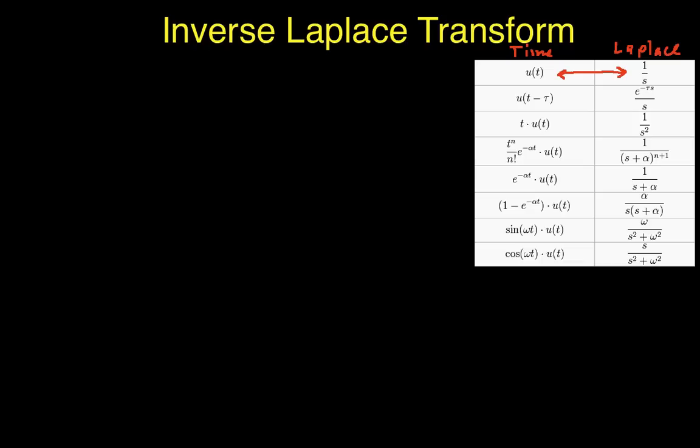The ones that we're going to use immediately are these two. A decaying exponential transforms to 1 over s plus alpha, where alpha is this value up here.